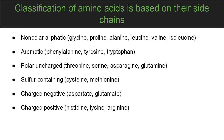Non-polar aliphatic amino acids include glycine, proline, and alanine. Aromatic amino acids include phenylalanine, tyrosine, and tryptophan.